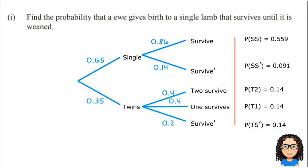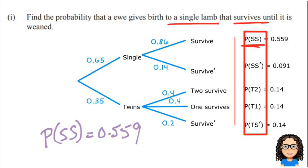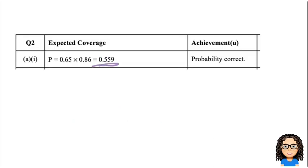I've just made a nice tidy copy. Now let's look at the actual question. Before I look at the question I needed to get the tree diagram set up. The question asks: find the probability that a ewe gives birth to a single lamb that survives until it is weaned. Looking at the combinations, I want the single lamb that survives — that's 0.559. Getting to that answer earns full marks for achieved.